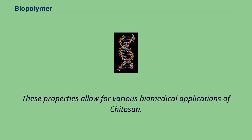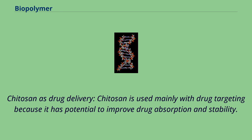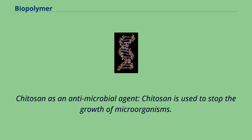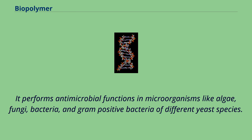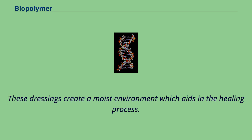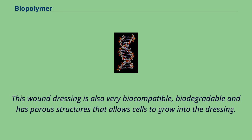These properties allow for various biomedical applications of chitosan. Chitosan drug delivery: chitosan is used mainly with drug targeting because it has potential to improve drug absorption and stability. In addition, chitosan conjugated with anti-cancer agents can also produce better anti-cancer effects by causing gradual release of free drug into cancerous tissue. Chitosan as an antimicrobial agent: chitosan is used to stop the growth of microorganisms, performing antimicrobial functions against algae, fungi, bacteria, and gram-positive bacteria of different yeast species. Chitosan composite for tissue engineering: blended powder of chitosan along with alginate are used together to form functional wound dressings. These dressings create a moist environment which aids in the healing process and are biocompatible, biodegradable, and have porous structures that allow cells to grow into the dressing.